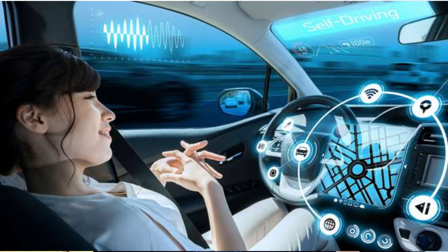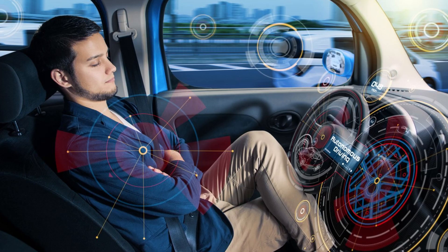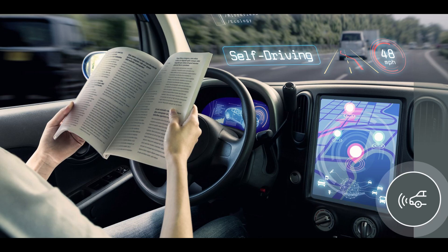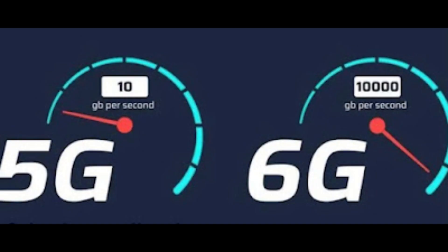If you understand the route, you can already predict it and open it on mobile, predict it on the map, and navigate it. That means it is useful and informative. So what are the challenges? A high-speed network plus intelligent smart network — this is 6G technology.